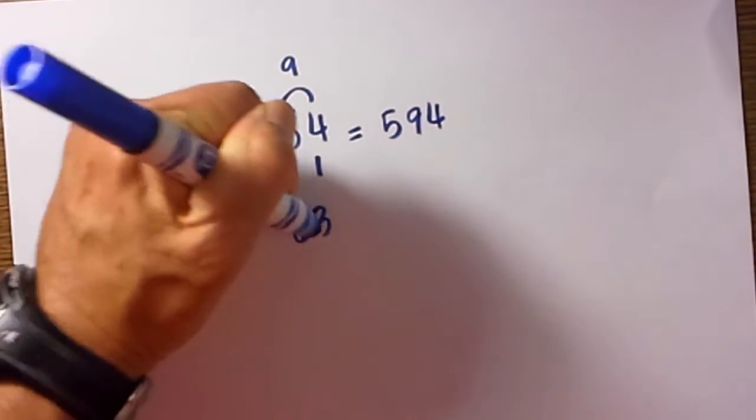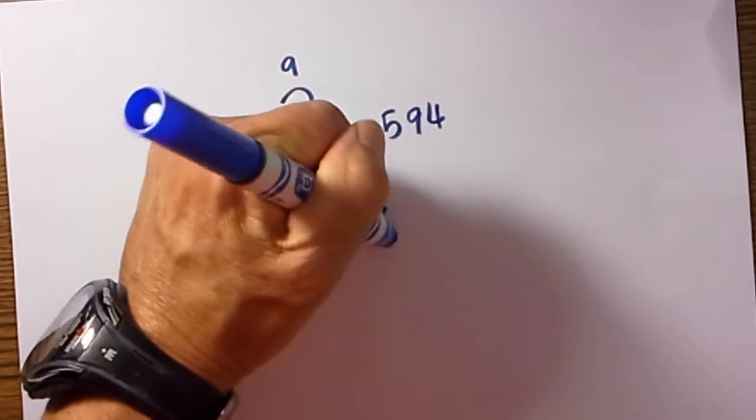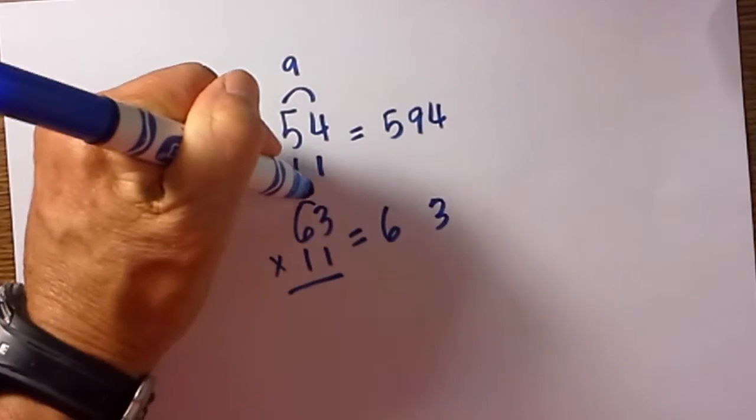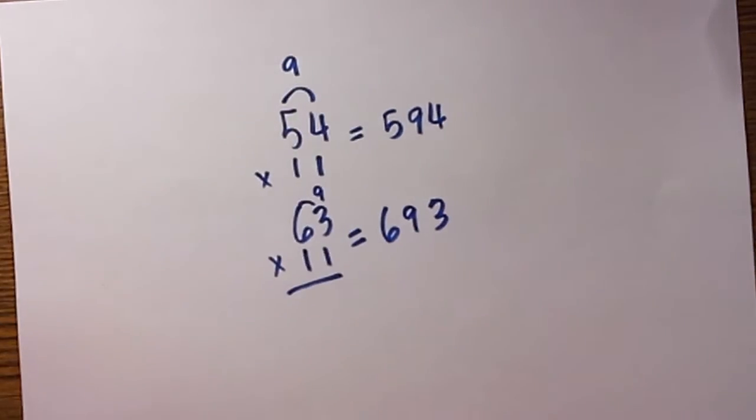Let's look at another example: 63 times 11. Look how quickly you can do this. The first digit is 6. The last digit is 3. 6 plus 3 is 9. There we go: 693.